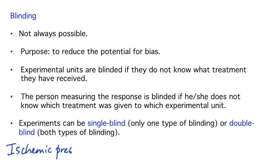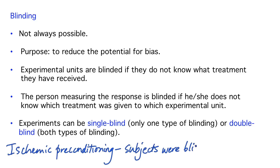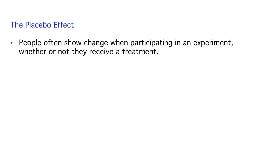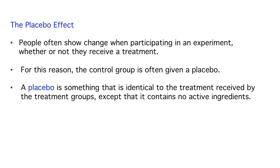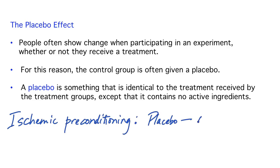The ischemic preconditioning experiment was single-blind — subjects did not know which treatment they received. They also used a placebo. People often show change when participating in an experiment whether or not they receive a treatment; this is known as the placebo effect. For this reason, the control group is often given a placebo, which is something identical to the treatment received by the treatment groups except that it contains no active ingredients, so subjects aren't aware of whether or not they're receiving a treatment. In this experiment, the placebo was the application of zero pounds pressure.